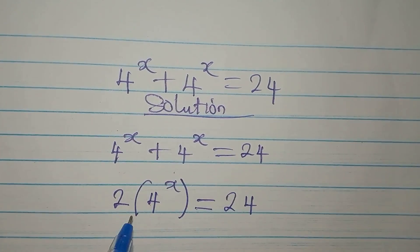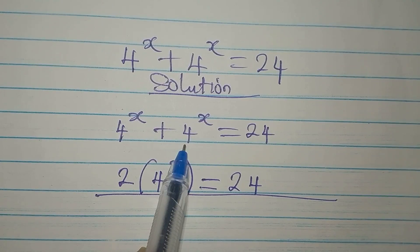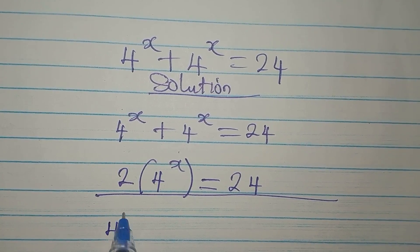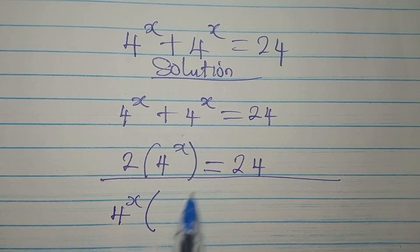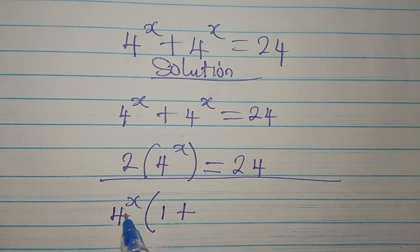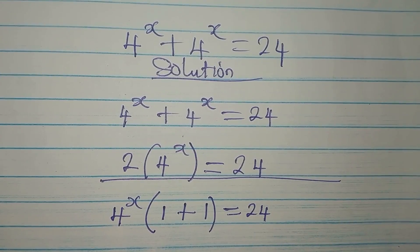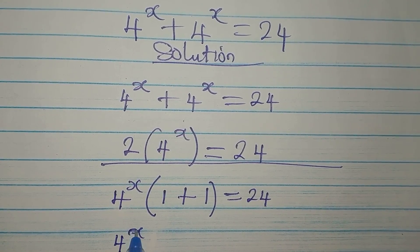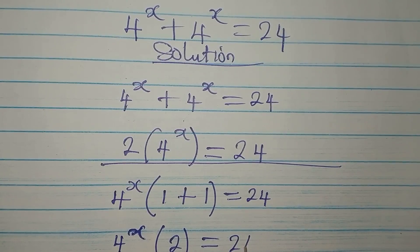If you do not understand what I've done here, let's take a look. We have 4 to the power of x plus 4 to the power of x — these are two terms and both have 4 to the power of x in common, so we can factorize it out. We get 4 to the power of x times (1 plus 1), and 4 to the power of x divided by 4 to the power of x is 1. So 1 plus 1 is 2, and this equals 24.